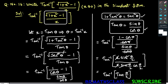Now you see this is of the form tan inverse of tan theta. What is the formula for tan inverse of tan theta? From properties of inverse trigonometric functions, we know that tan inverse of tan theta is theta. So what is tan inverse of tan(theta by 2)? That is theta by 2.